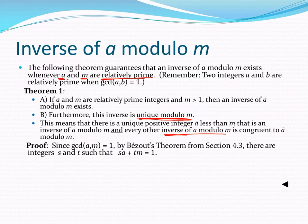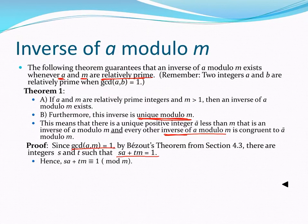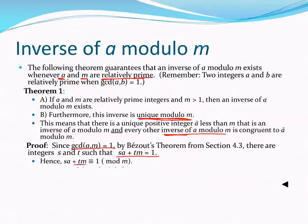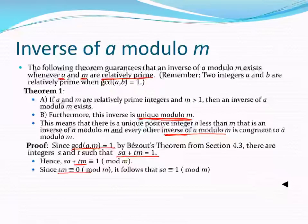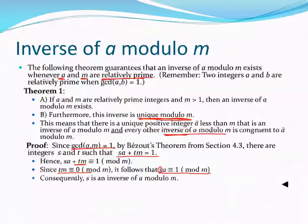Here's the proof. If the greatest common divisor of A and M is 1, I can express 1 as a linear combination of A and M by Bezout's theorem. If that equation is true, I can set them congruent with respect to modulus M. Since T times M is congruent to 0 mod M, I can replace that with 0 and get S·A congruent to 1 mod M, which means S is an inverse of A mod M. An additional proof is needed to show uniqueness, which we don't cover in this video.